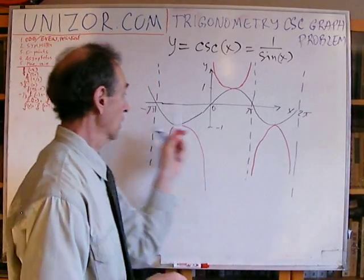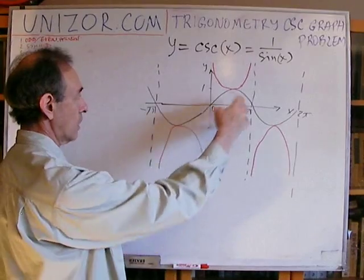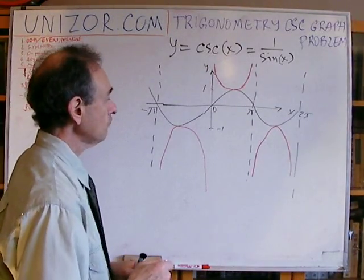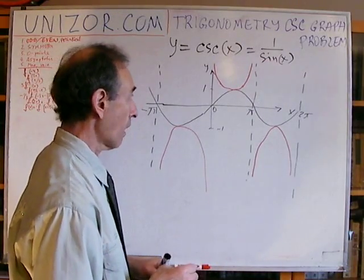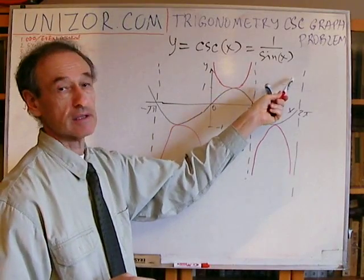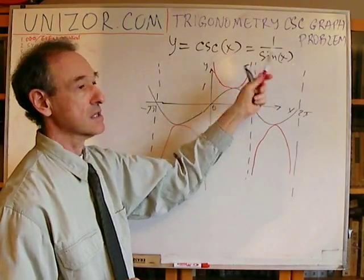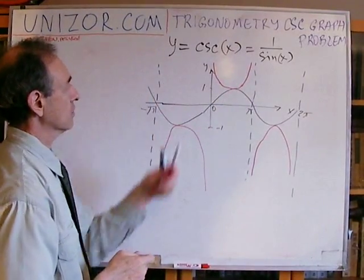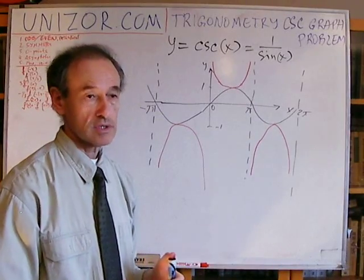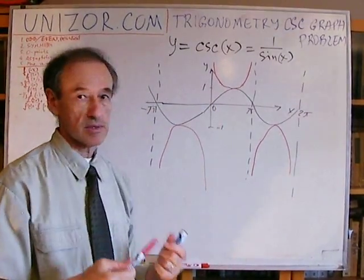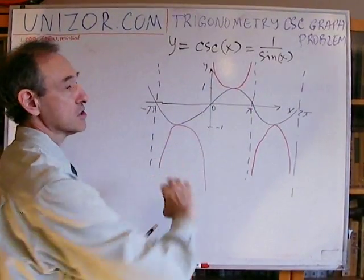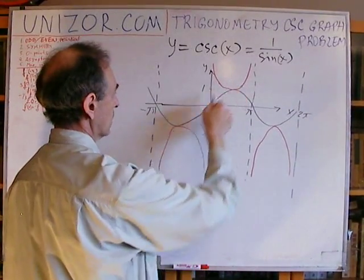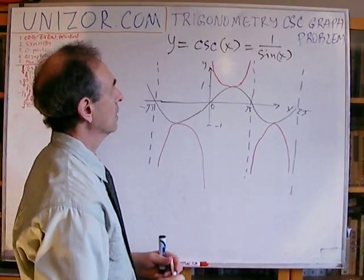The red ones are the graph of the cosecant. Now let's do the properties of this graph. First: odd, even, or neither? Obviously it's odd, because sine is odd. Sine changes sign if the argument changes sign: sine of minus x is minus sine of x. Obviously the same goes to 1 over sine of x, which is the cosecant. Odd functions are symmetrical relative to the center — it's central symmetry. If you turn the whole picture by 180 degrees clockwise or counterclockwise, the graph turns into itself. So the function is odd.